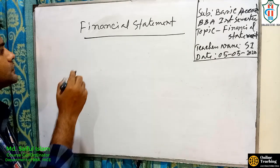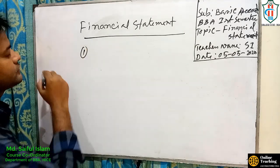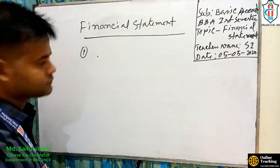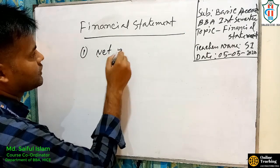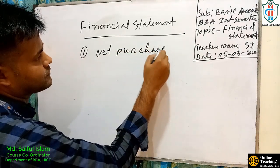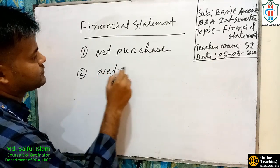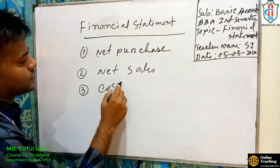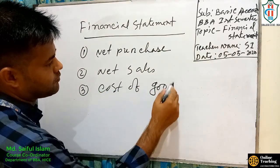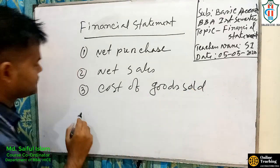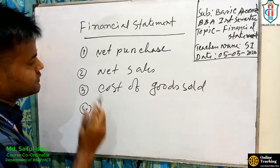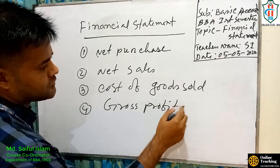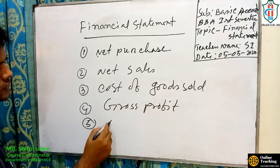The items are: number one, net purchases; number two, net sales; number three, cost of goods sold; number four, gross profit; number five, net profit.